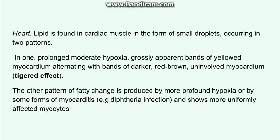In the case of the heart, two patterns are mostly seen. First is the uniform pattern, which is seen due to profound hypoxia or due to myocarditis, where fat is deposited uniformly. Second is due to moderate hypoxia — if there is damage, it will lead to a tiger stripe defect. In the tiger stripe defect, there are bands of yellow myocardium alternating with uninvolved myocardium which is darker red-brown in color.